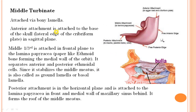Now we will move to the middle turbinate, which has a very complex anatomy, so pay close attention. The middle turbinate is an ethmoid turbinate — formed from the ethmoid bone. It is attached via bony lamella to the base of the skull as well as to the lateral wall.